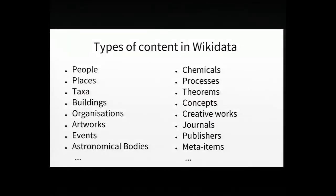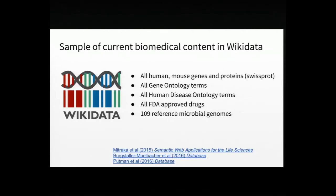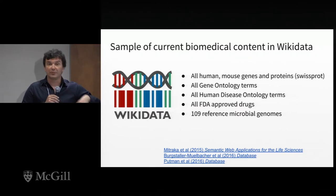Let me say a few more words about the types of content you can find in Wikidata. Wikidata is domain general — not about any single topic. You can find content about people, buildings, astronomical bodies, and creative works. The GeneWiki project has been contributing over the years some amazing, highly curated content extracted from the literature on all areas relevant to biomedicine. We have full ontologies, entities for genes in humans and other species, and information about drugs.